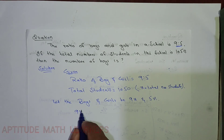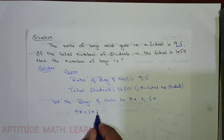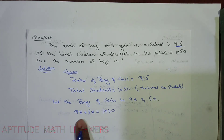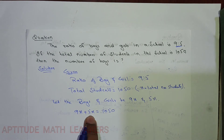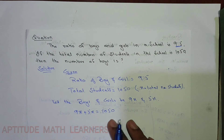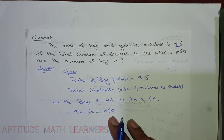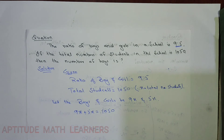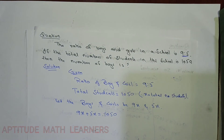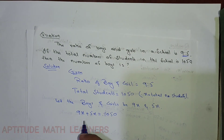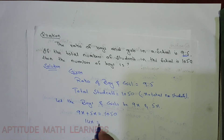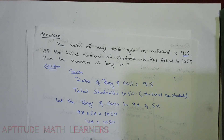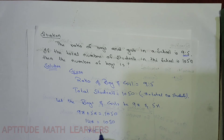Now going further to solve the question: 9x plus 5x equals 1050. The 9x is the ratio of boys and 5x is the ratio of girls, and together they make the total of 1050 students. So 9x plus 5x becomes 14x equals 1050.